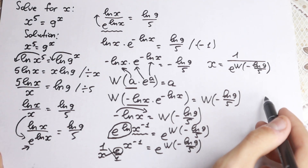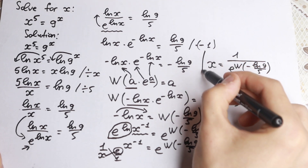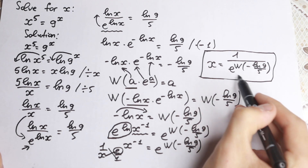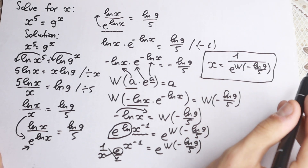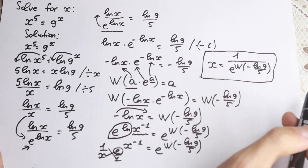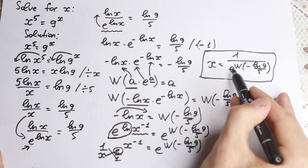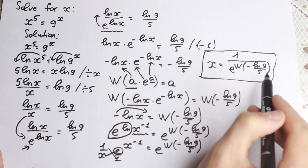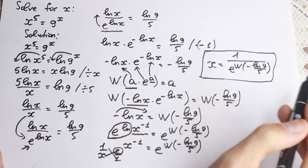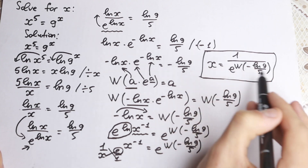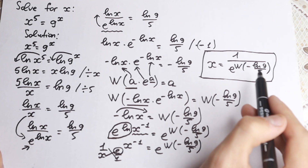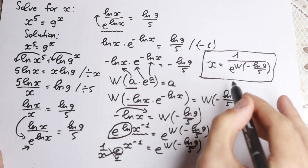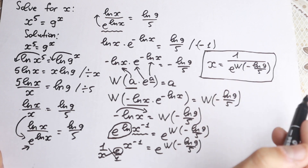So we have our answer: x equals 1 over e to the power W(minus ln 9 over 5). This is a really interesting result. The argument of the W function is a constant, so e raised to that constant gives a constant, and our answer is likely a decimal rather than a whole number. You can check this in an internet library or table to find the numerical approximation.